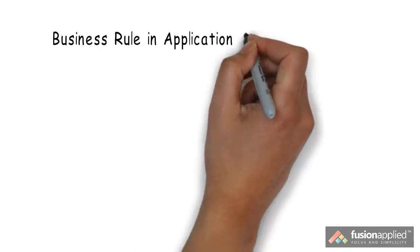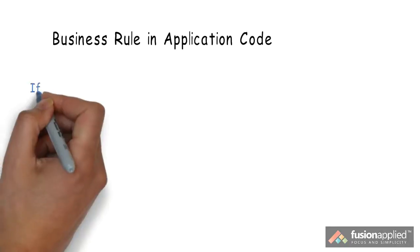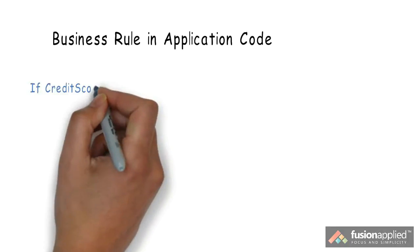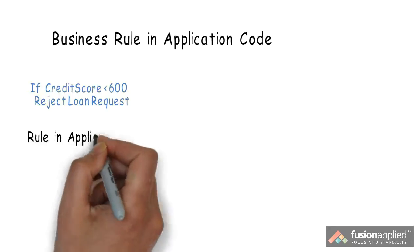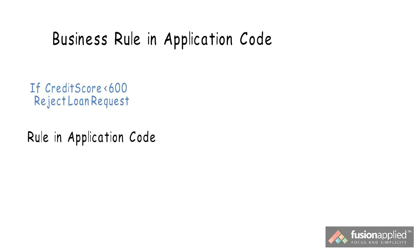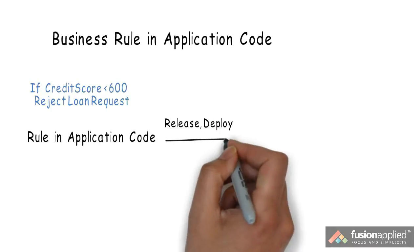You can always code these business rules in your application code. Let's say we wanted to code a rule like this: if credit score is less than 600, reject a loan request. A developer will code this rule in an application, for example a Java application, and then build, release, and deploy this application.